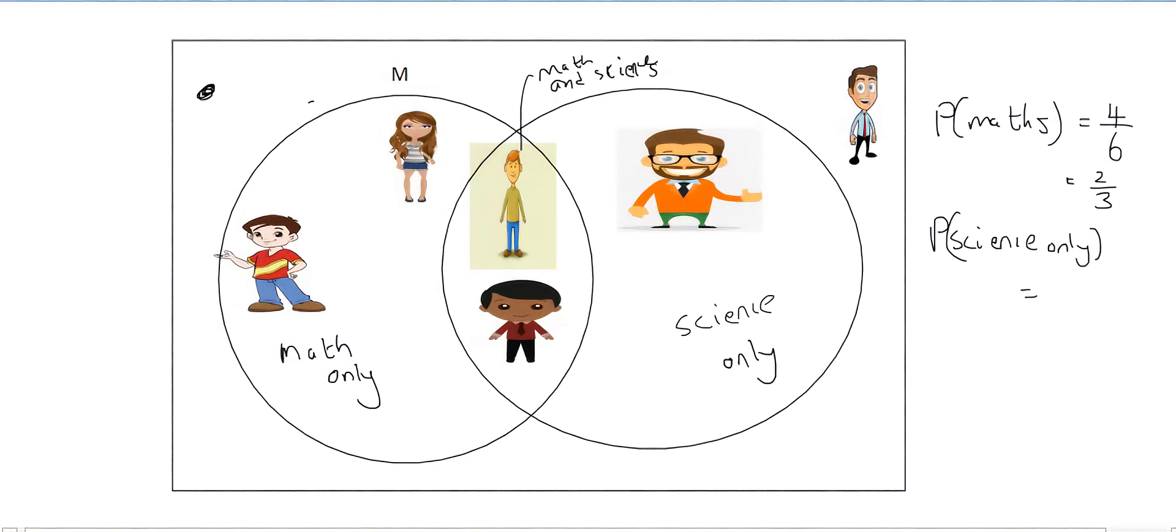The next question is, what is the probability that someone does science only? Well, science only was Ernest. And so there's only one person who does science only. I mean, Todd and Harry do science, but they don't do science only. So out of the six people, one of them would do science only.